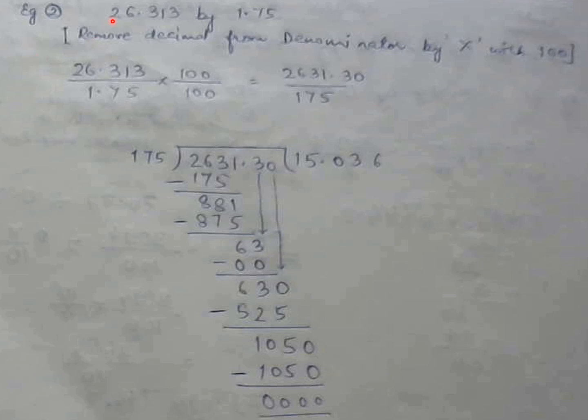Next example, 26.313 by 1.75. Again here both the numbers are decimals. So what is our target? Our target is to make the denominator to a whole number. So if you see 1.75 has two digits after decimal. So what I will do? I will multiply it with 100.